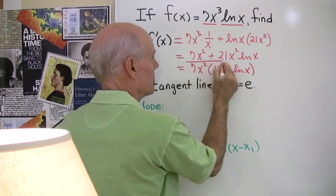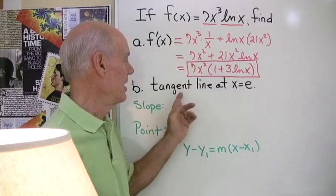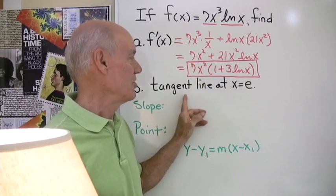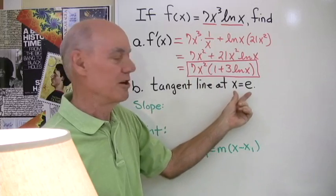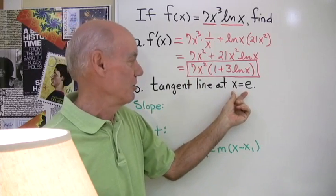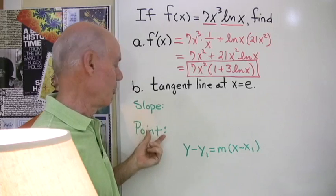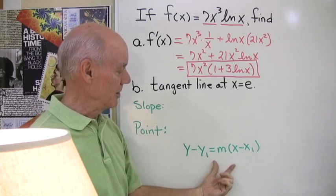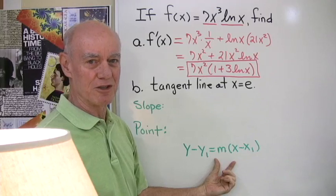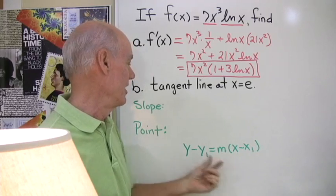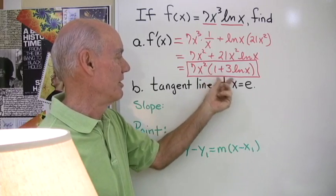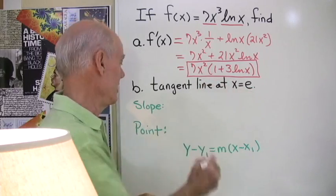Okay so there's my derived function for any value of x. Now I want to find the tangent line to this function right here when x is equal to e. So to do that I need two things. The slope and a point on the line so I can substitute into my point slope form of the equation of a line.